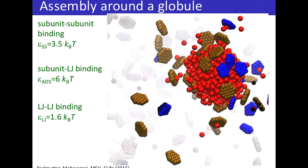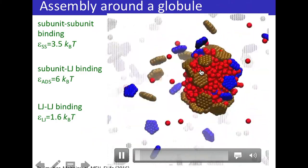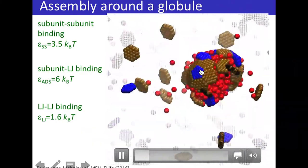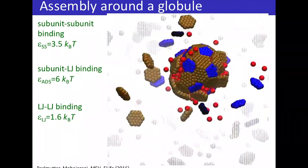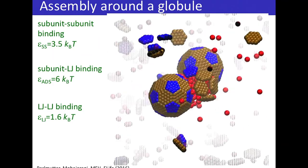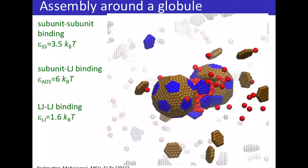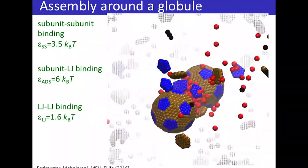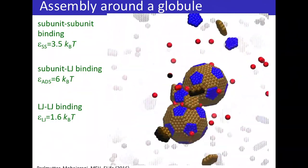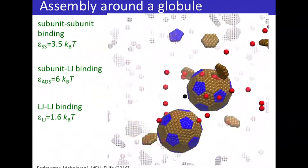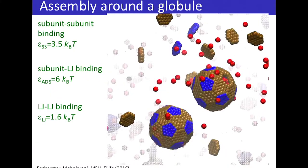Here is an example simulation showing rapid formation of a cargo globule, followed by shell proteins absorbing onto it in a disordered manner — very reminiscent of capsid assembly in the Gelbart–Zlotnick experiments. The shell starts to assemble, and after some time you end up with two shells separated by a neck of cargo particles. Shell proteins eventually get into the neck region, recognize they can interact with the open edge, cut the neck, and complete budding of two functional carboxysomes.